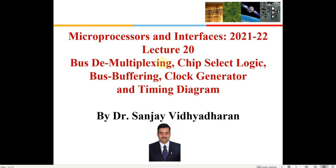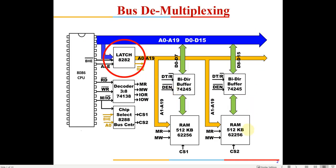Let's start today's class continuing with the hardware aspects from the last class. This was the main block diagram we discussed. There was a requirement of a latch — the purpose was to latch the data address bus and the BHE signal, because the address is placed on the address bus first, and then the same bus is required for placing data. This bus is multiplexed for both data and address.